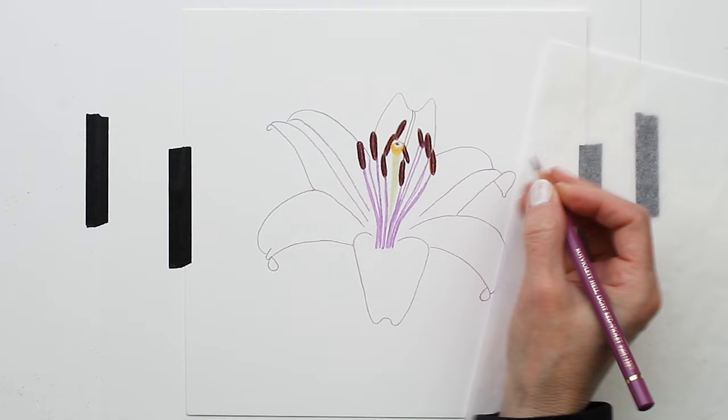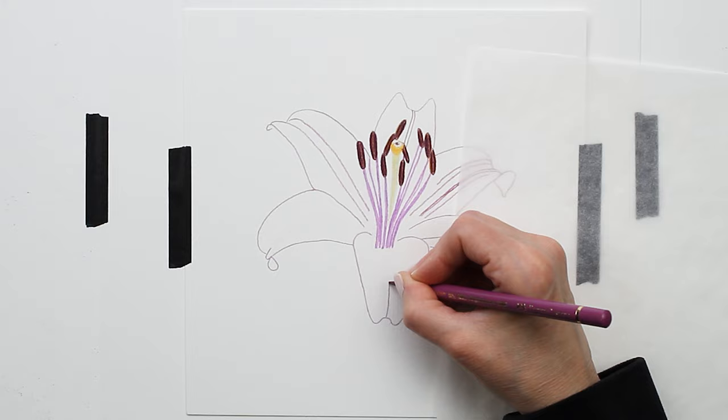And then starting to block in where I want the veins to go, and you can see how I'm curving those lines. That's really going to help give shape to those petals.